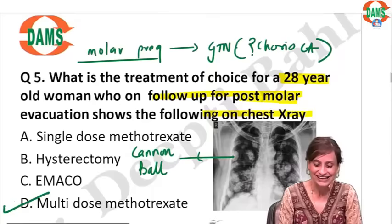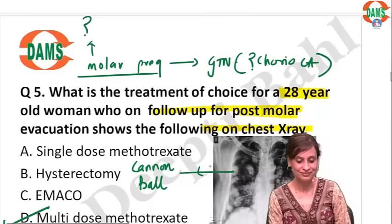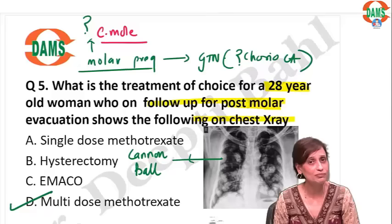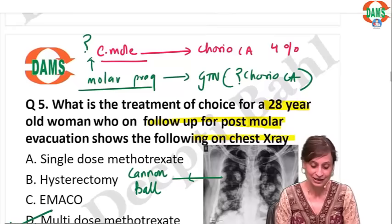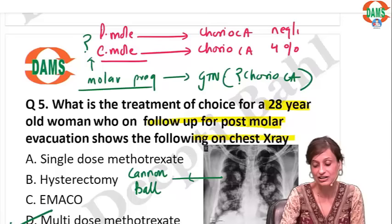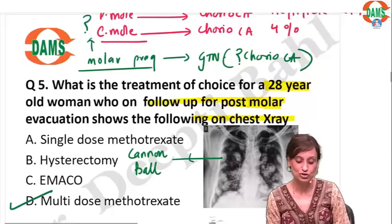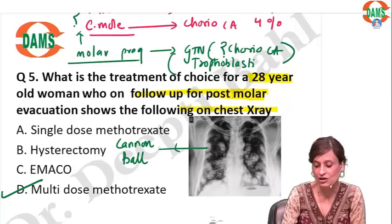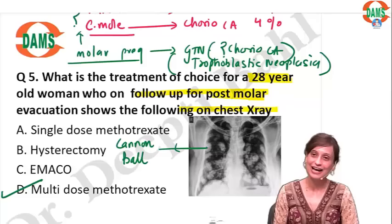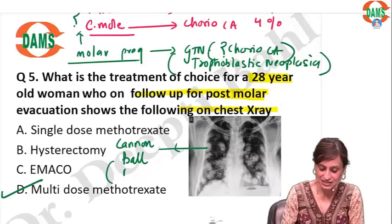What is the most likely molar pregnancy this patient had? She most likely had complete mole. Why not partial? Because the risk of conversion of complete mole to choriocarcinoma is around 4%, but the risk of partial mole to choriocarcinoma is negligible — less than 1%. Therefore most likely the patient had complete mole and has now developed choriocarcinoma — gestational trophoblastic neoplasia. The most common site for metastasis of choriocarcinoma is lungs.